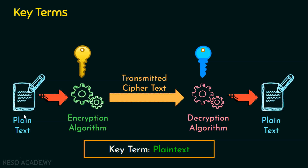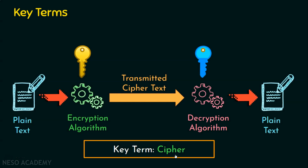For example, WhatsApp does end-to-end encryption — whatever message the sender sends is encrypted, sent to the WhatsApp server, and decrypted by the receiver. The WhatsApp application handles both encryption and decryption. The plaintext can be anything. The converted or encrypted plaintext is called the ciphertext. An encryption algorithm converts plaintext to ciphertext with the help of keys. Ciphertext is an unintelligible, scrambled message that no one can understand. The next key term is cipher, also called an encryption algorithm, which converts plaintext into ciphertext using a key as input. Generally, ciphers or encryption algorithms can be public — anyone can know which algorithm was used — but the key is the most critical information.